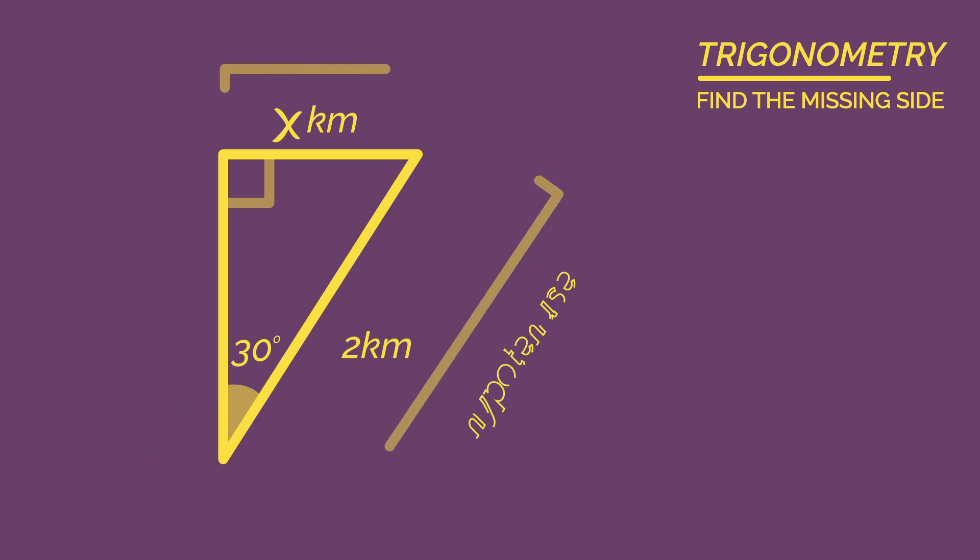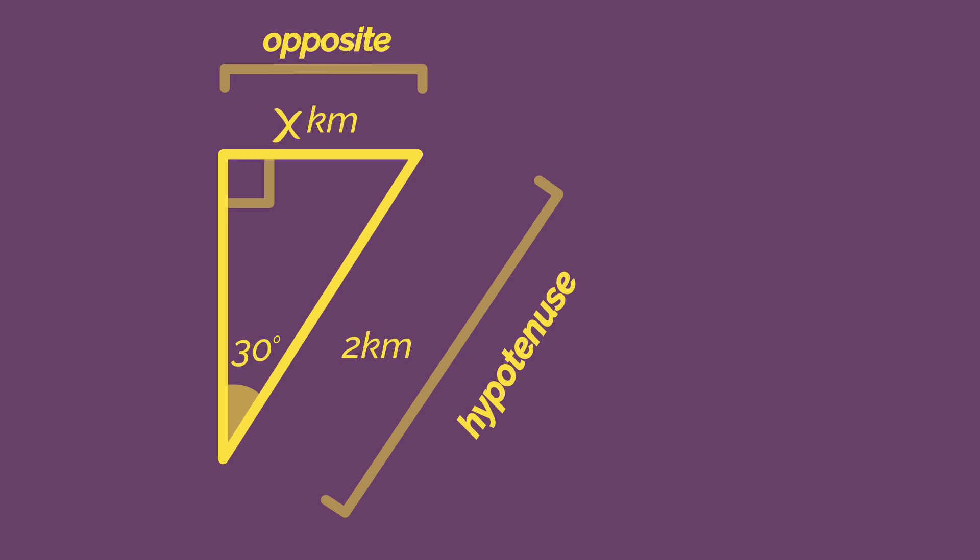The two kilometre is the hypotenuse because it is the longest side and is opposite the right angle. And the x is the opposite because it is opposite the 30 degree angle. In this question we can ignore the adjacent because we don't know anything about it and we aren't trying to find its length.